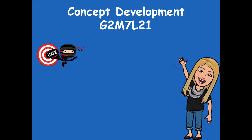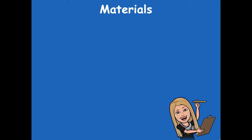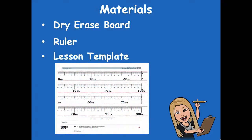Hey friends, it's Mrs. Walker. For our lesson today, we're going to talk about identifying unknown numbers. Our learning goal says: I can identify unknown numbers on a number line diagram. The materials you'll need for this lesson are your dry erase board, a ruler, and your lesson template.